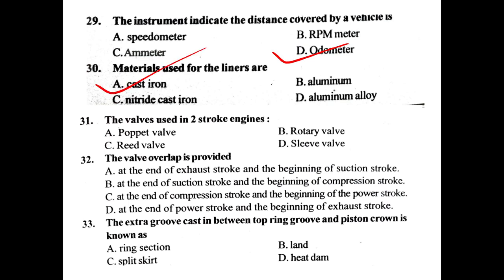Valves used in a 2-stroke engine: reed valve. The valve overlap is provided at the end of the exhaust stroke.